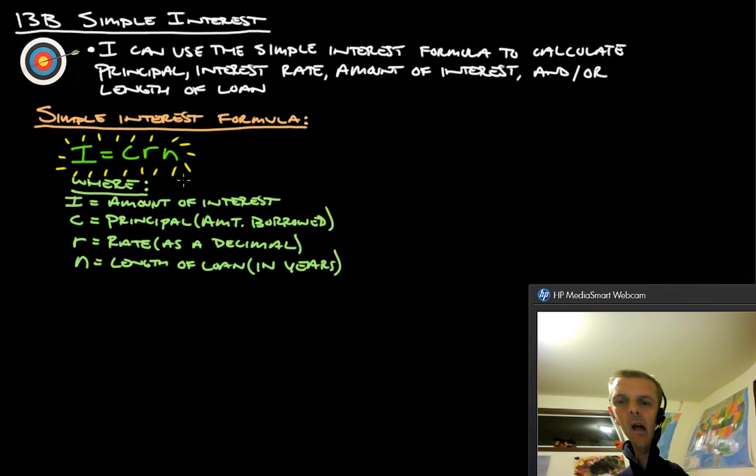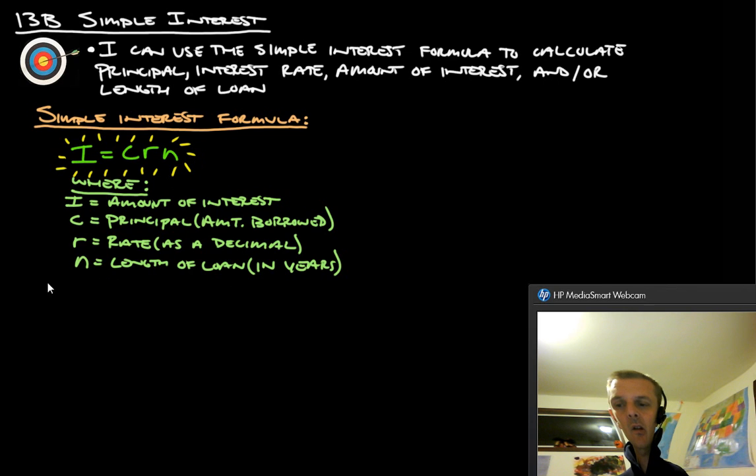Simple interest formula is I equals CRN, where I is the amount of interest, C is the principal amount, which is the amount that you borrowed, R is the rate as a decimal, and N is the length of loan in years. Okay? So, let's put this to use with example 9 from page 427.